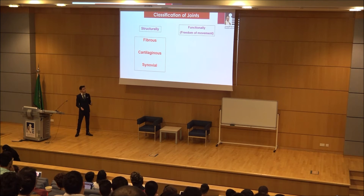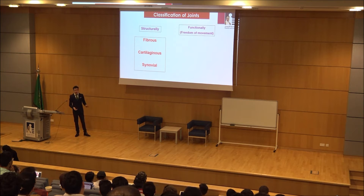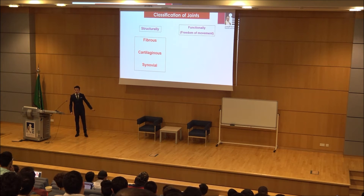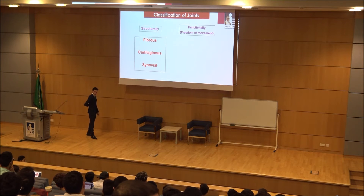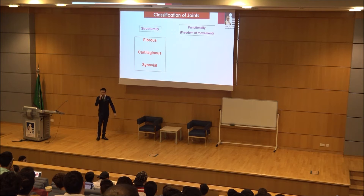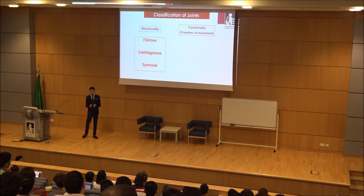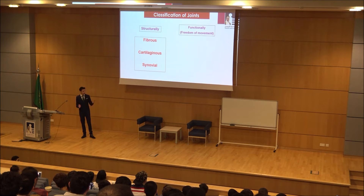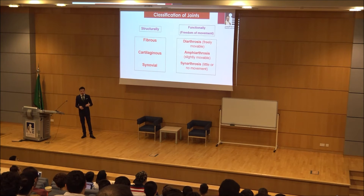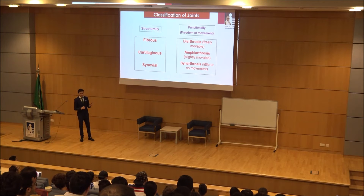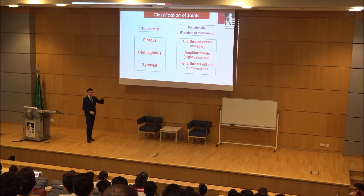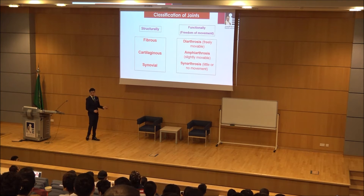Functionally, there are three types based on movement: completely free (freely movable), slightly movable, or completely immovable. The medical terms are: freely movable is diarthrosis, completely immovable is synarthrosis, and between them is amphiarthrosis. Remember: di-, syn-, and amphi- — all ending in arthrosis.